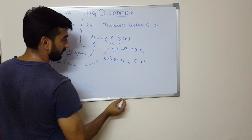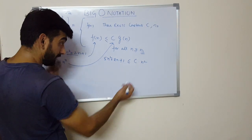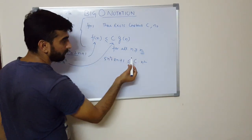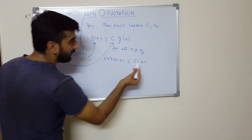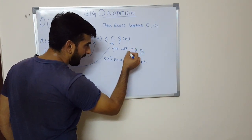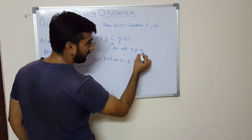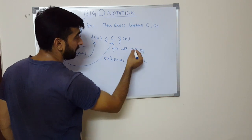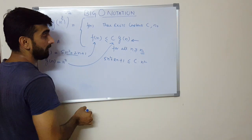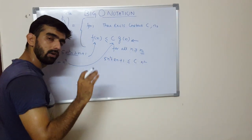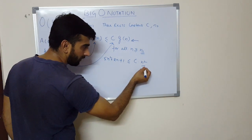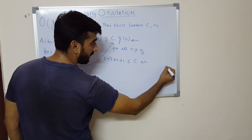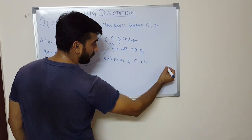So my g(n) is n². So now we have to find the value of c and n. First let me tell you, please do not confuse about n and n0. n0 is nothing—n0 is n itself, but that n0 is that value of n after which or for which this statement holds true. So n0 is one of the values of n which we are going to find out from here.